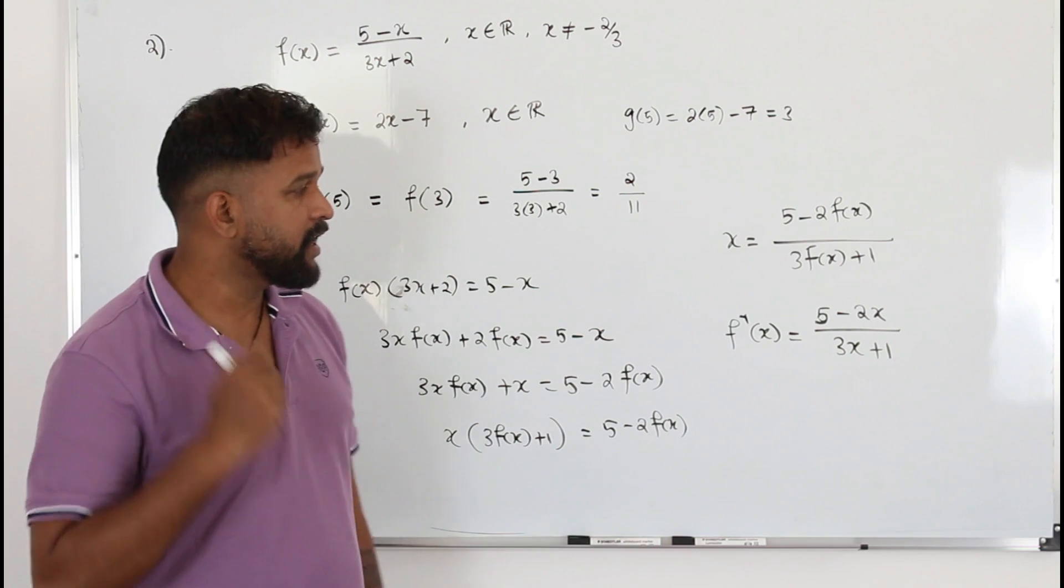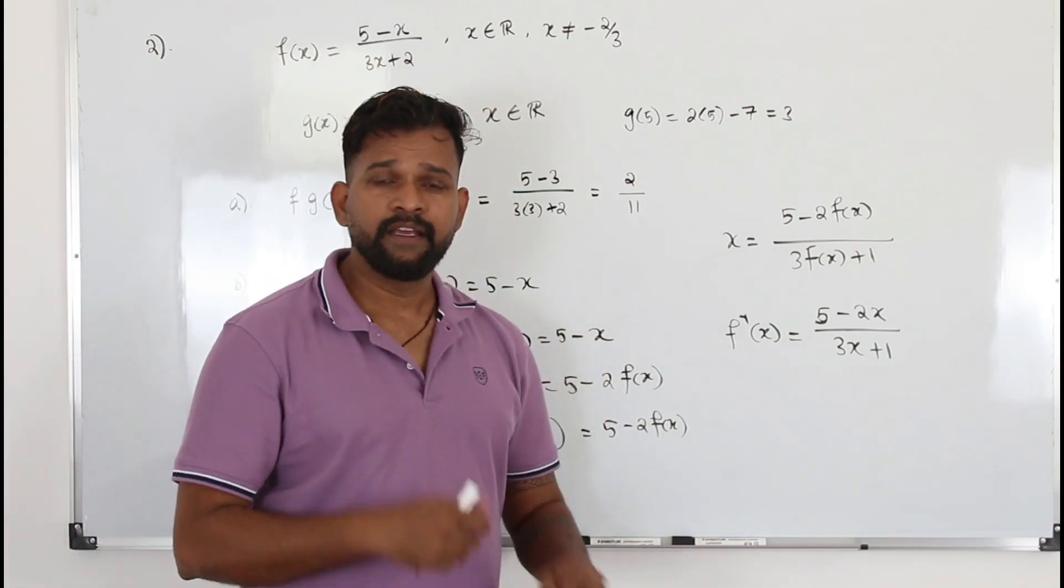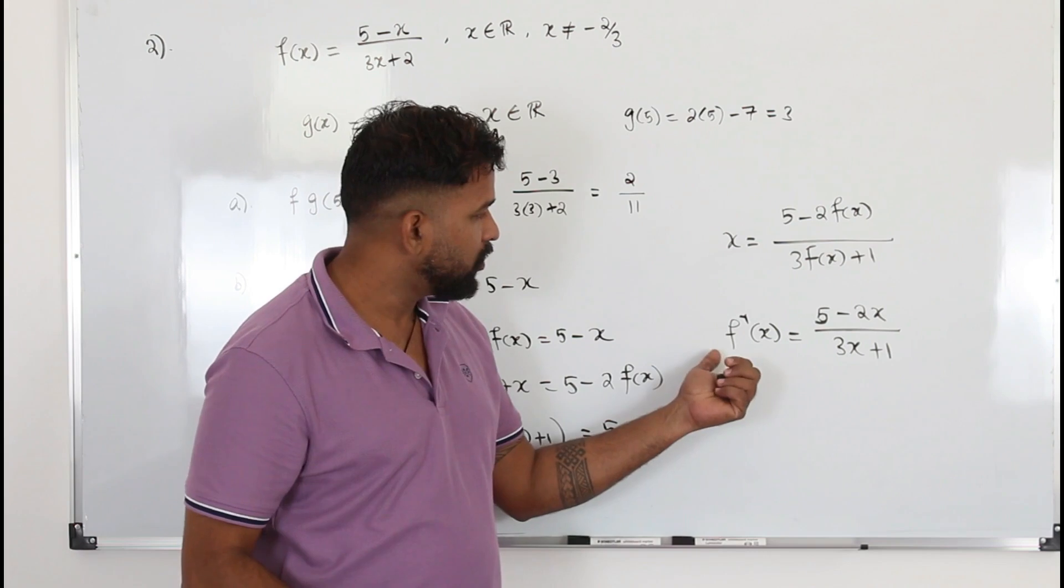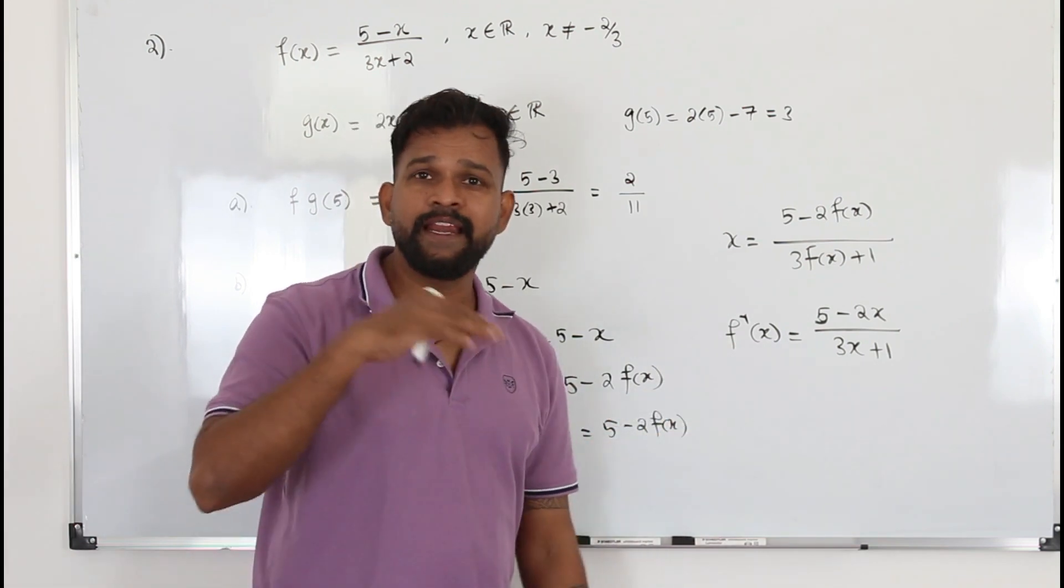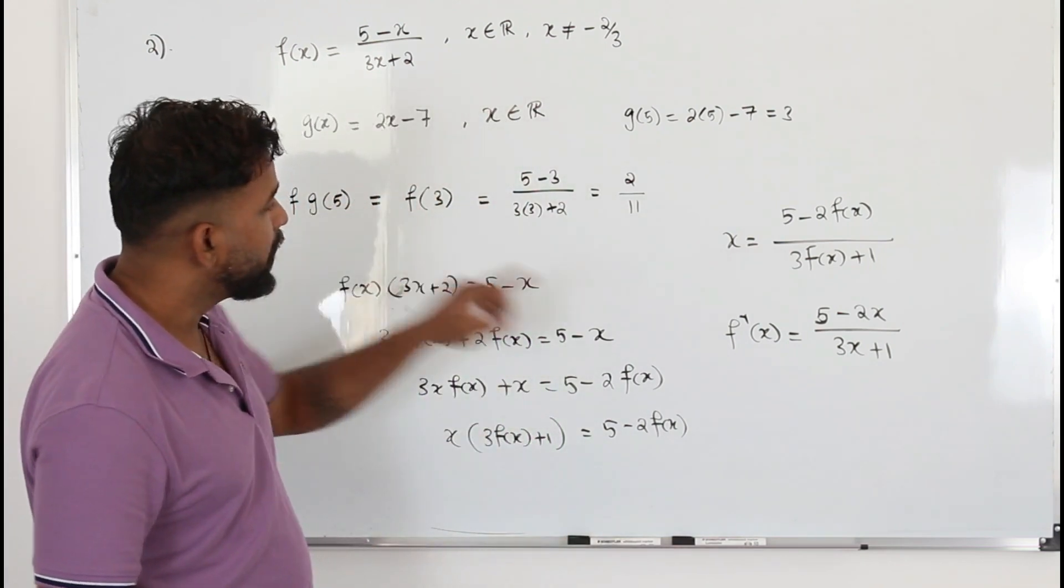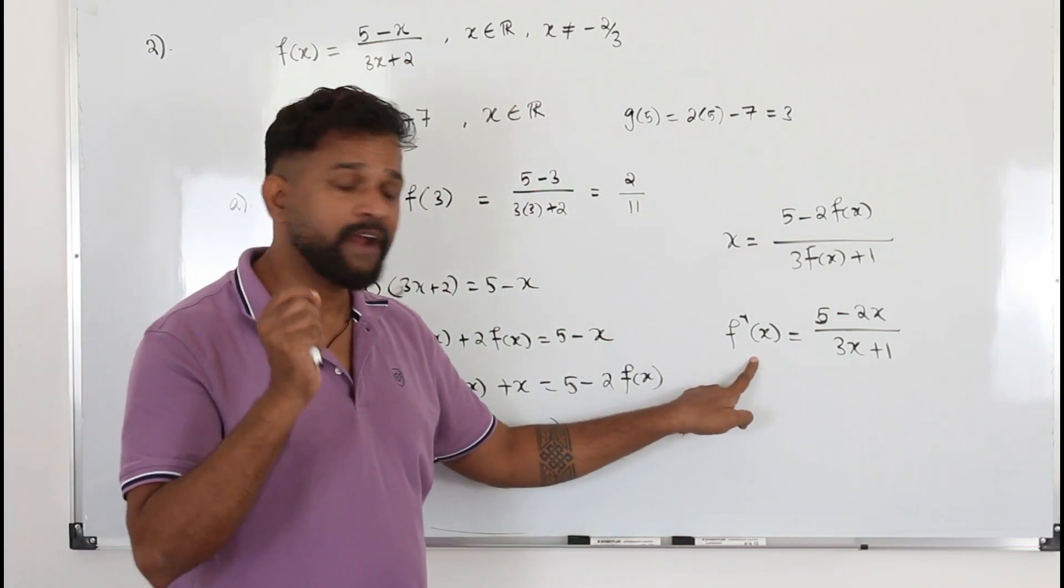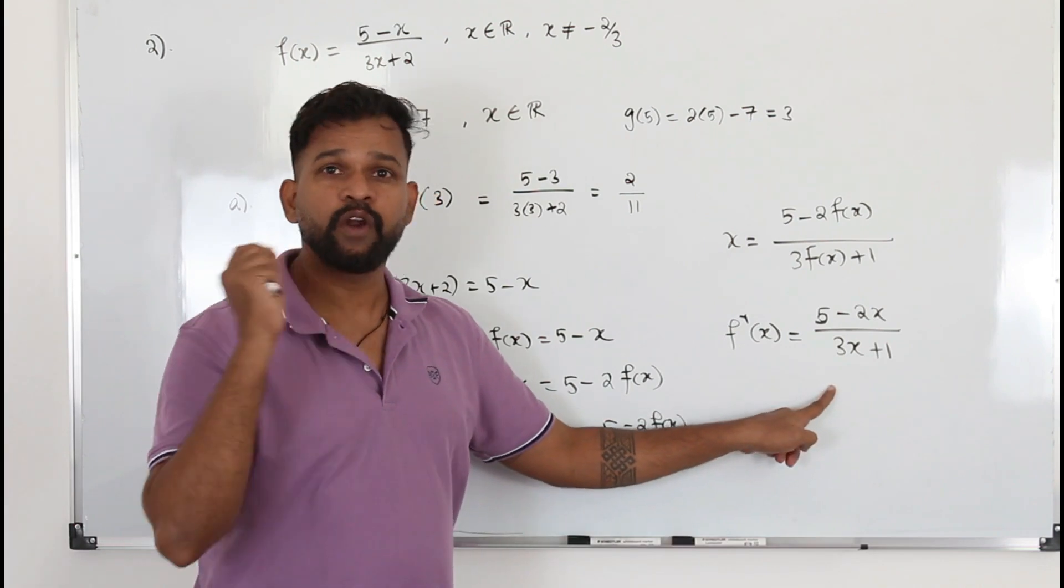Now listen to me very carefully. Unlike O level math, in IGCSE Cambridge math, when they ask you to find f inverse, you can stop here and you'll get the full mark. But in AS A level, when they ask you to find f inverse, you have to find the domain of f inverse. Otherwise, you're going to lose one mark.